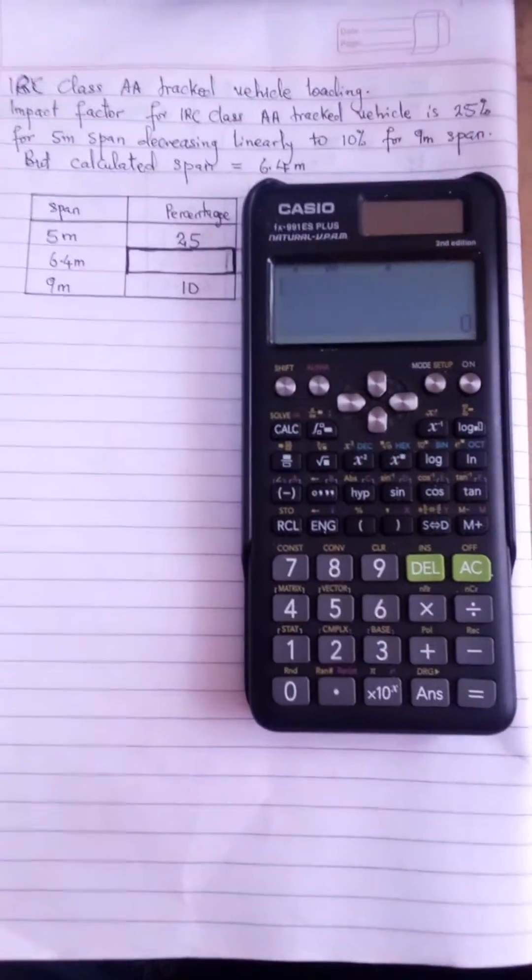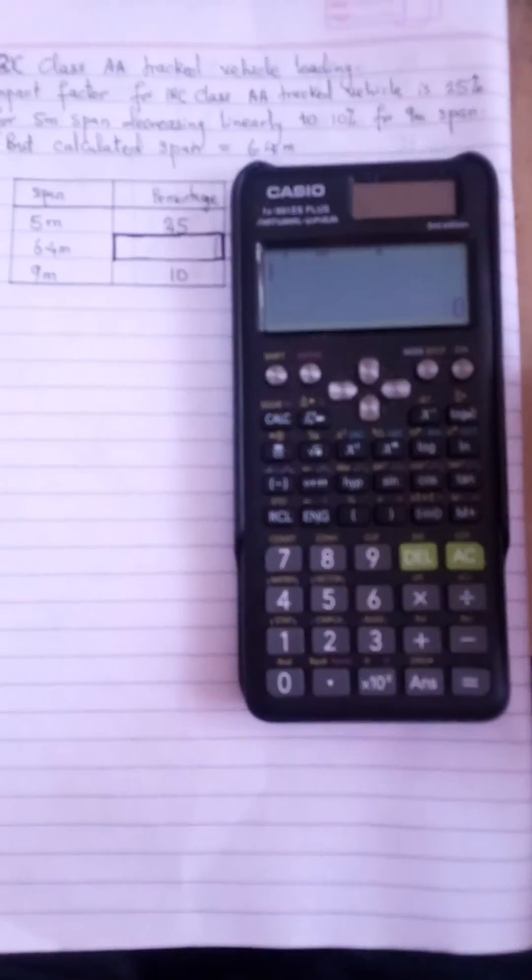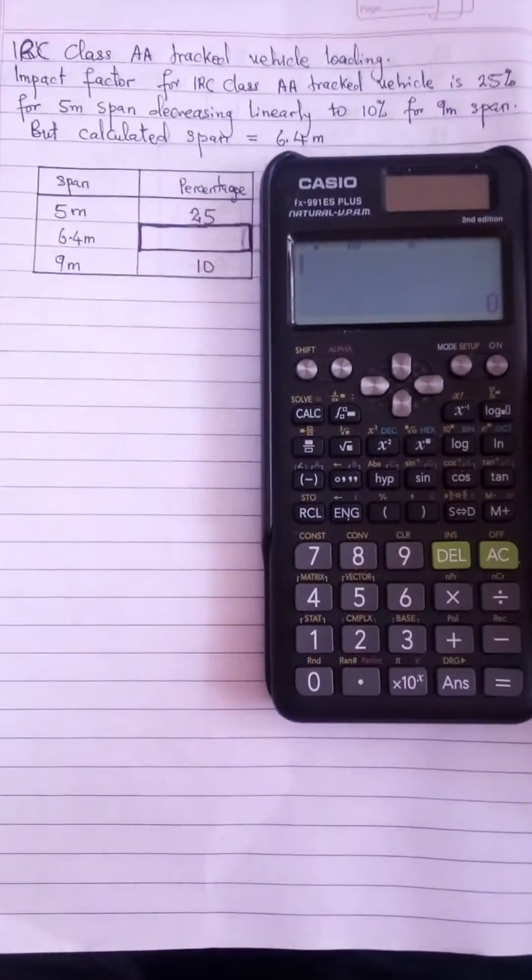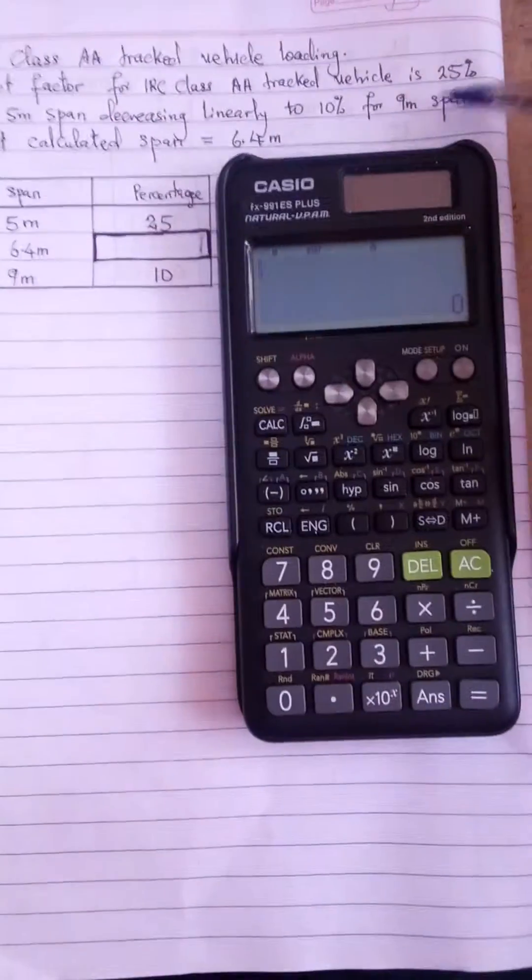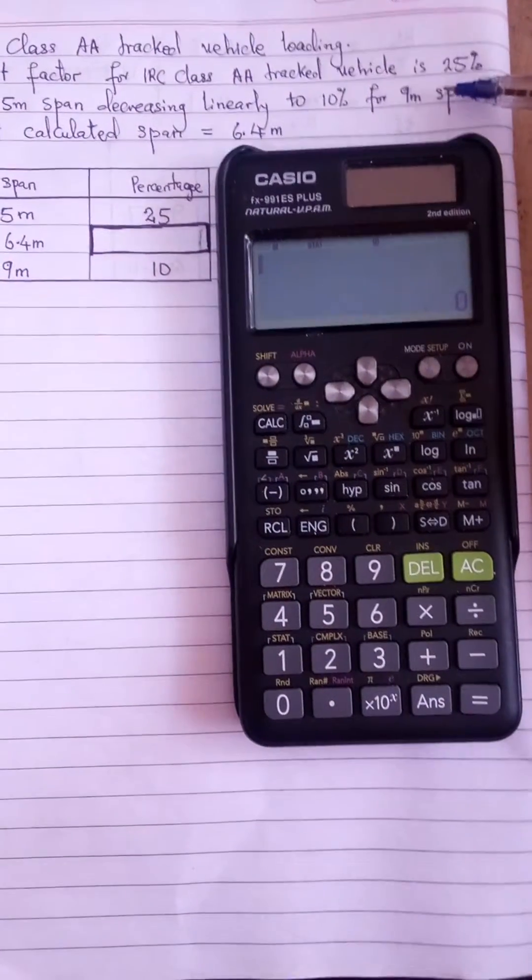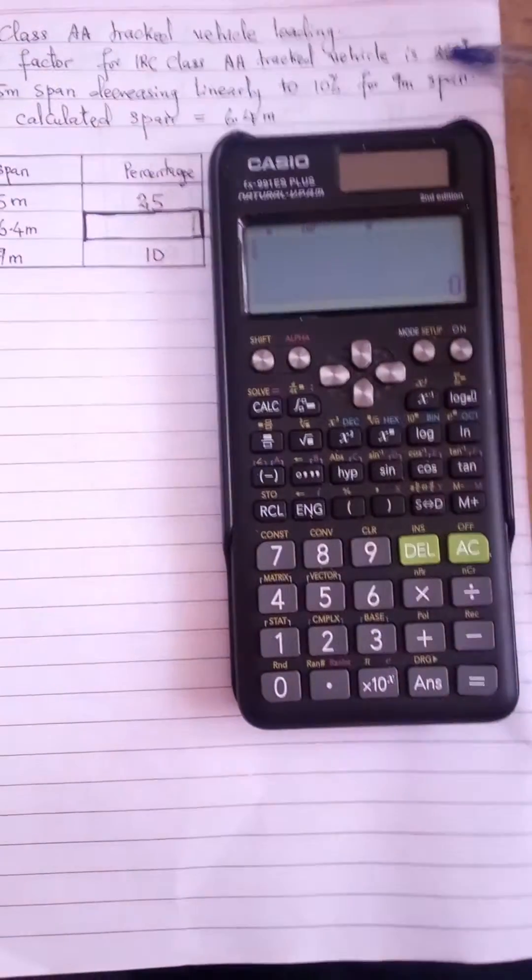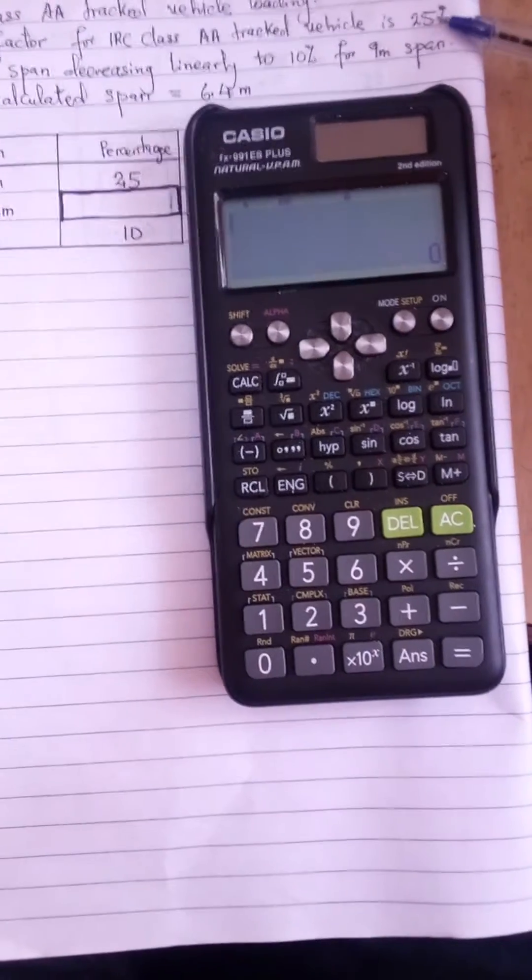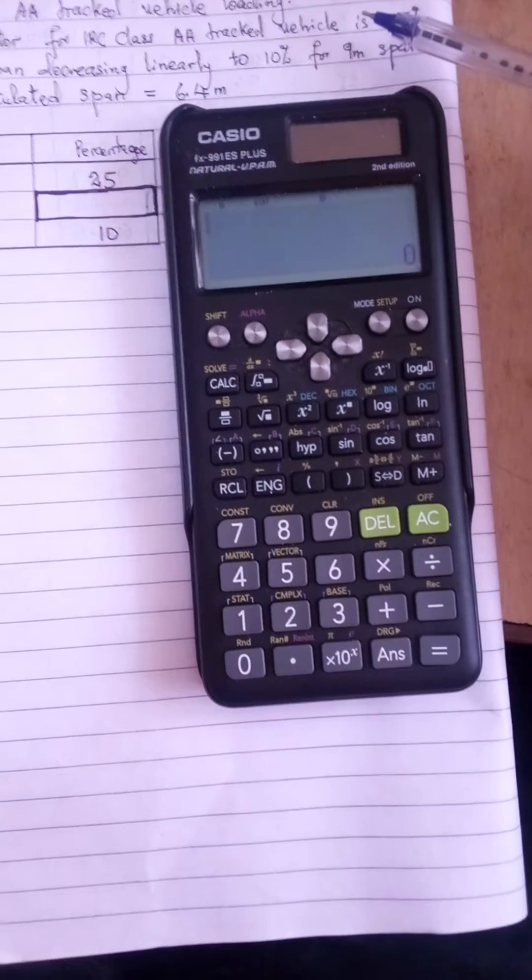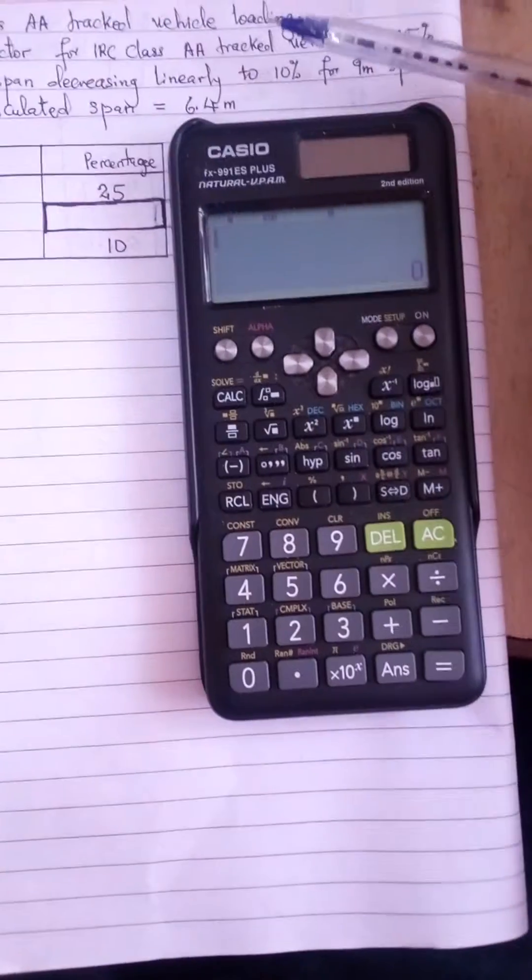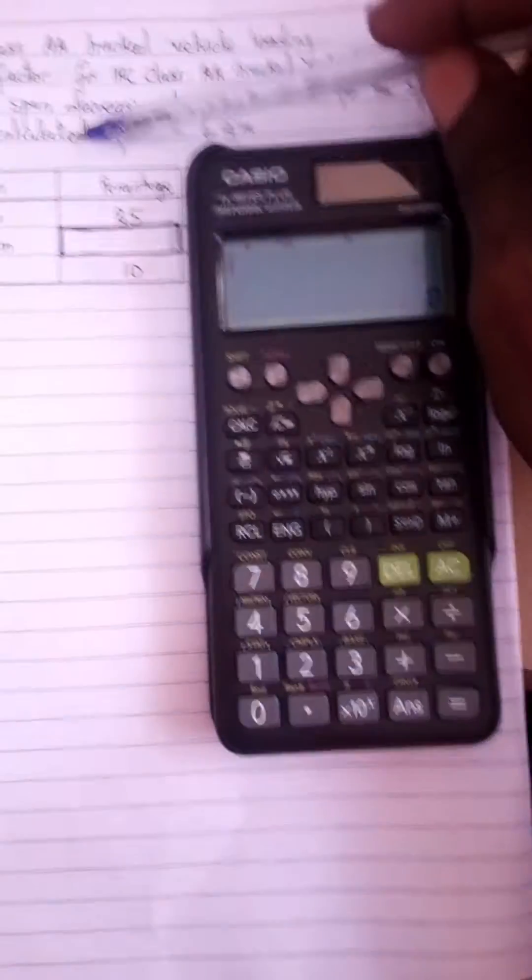Hello guys, today I was solving numericals on golf design making use of IRC class AA truck vehicle loading with impact factor that gives 25% for span 5 meters which decreases nearly linearly to 10% for 9 meters span, but my span is 6.4 meters.